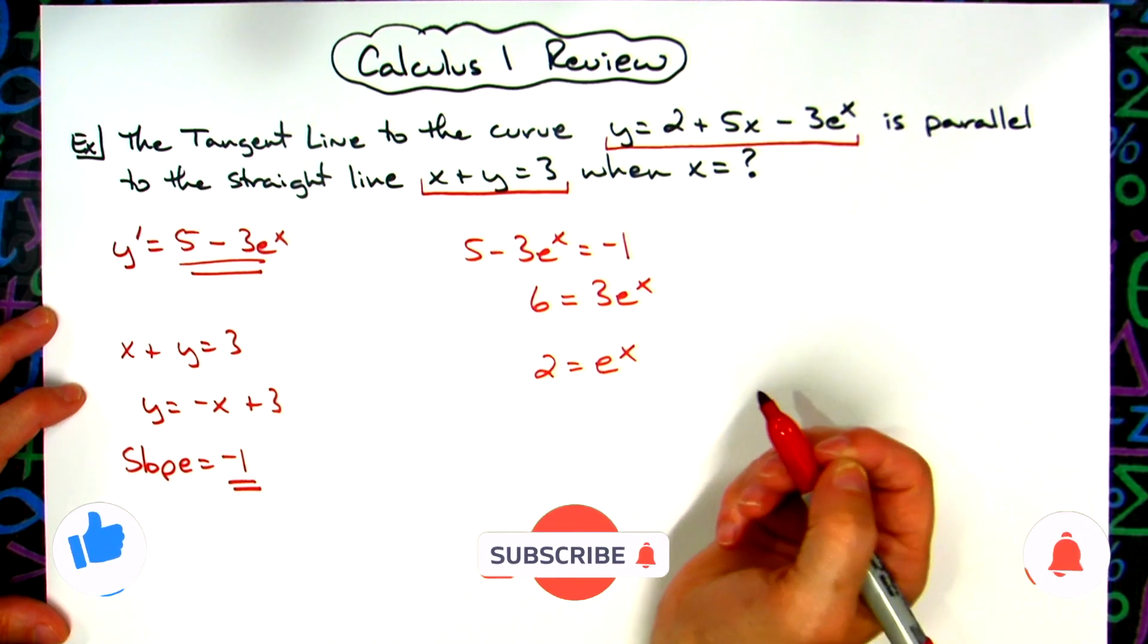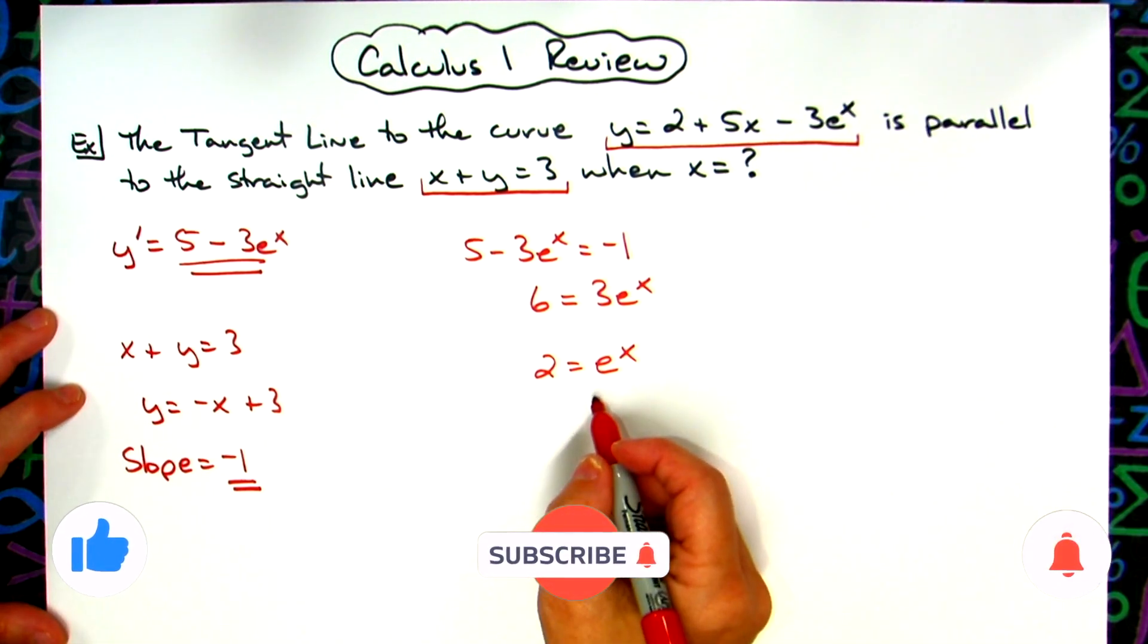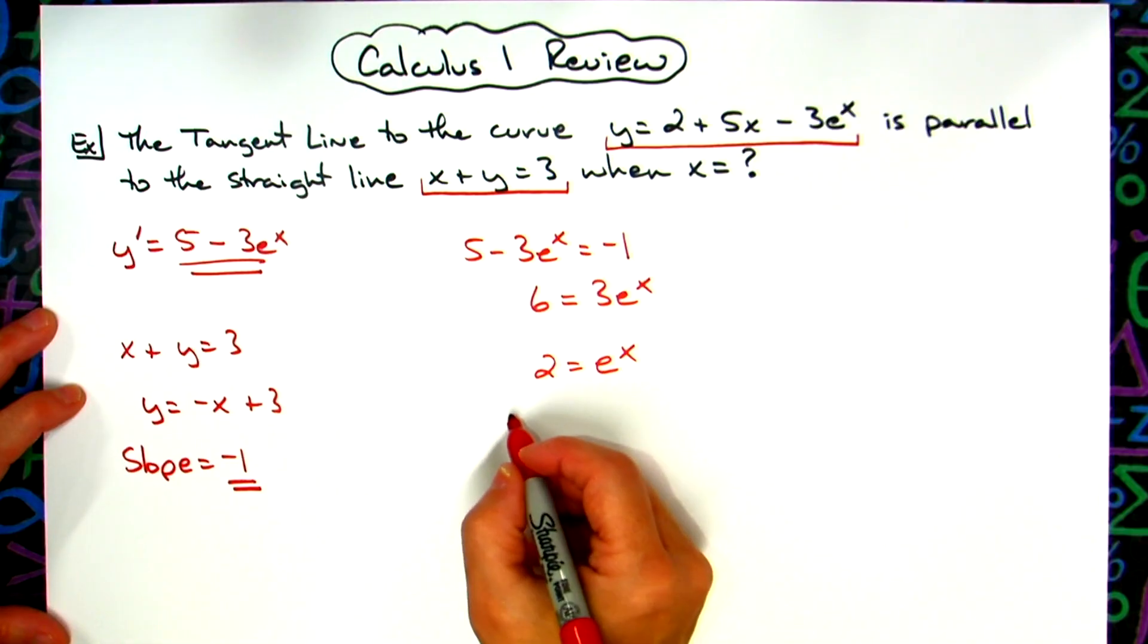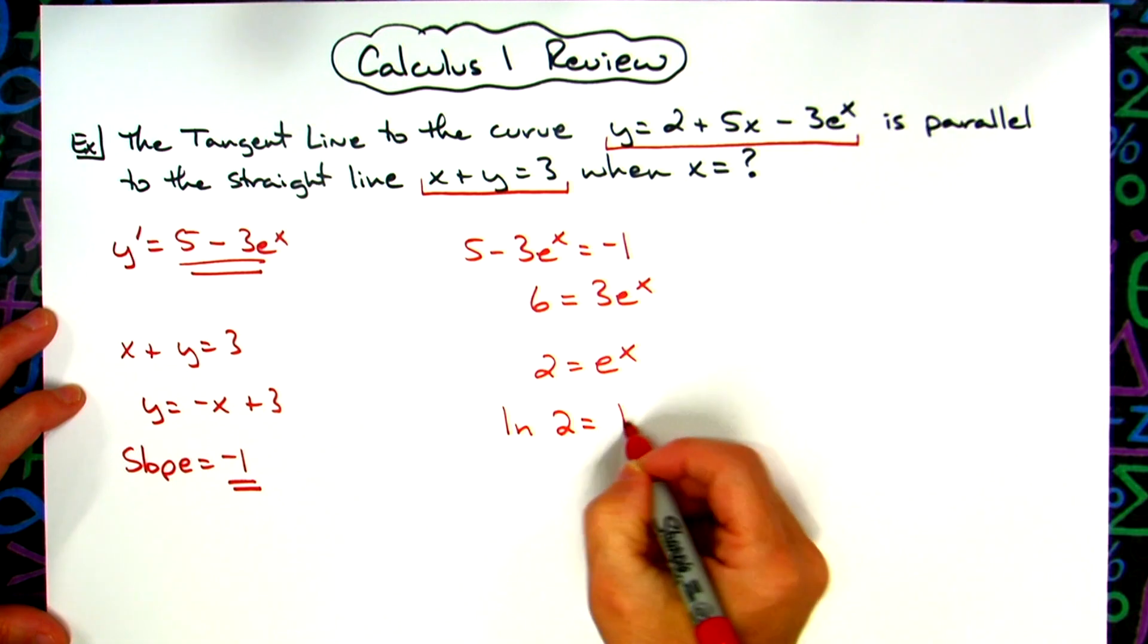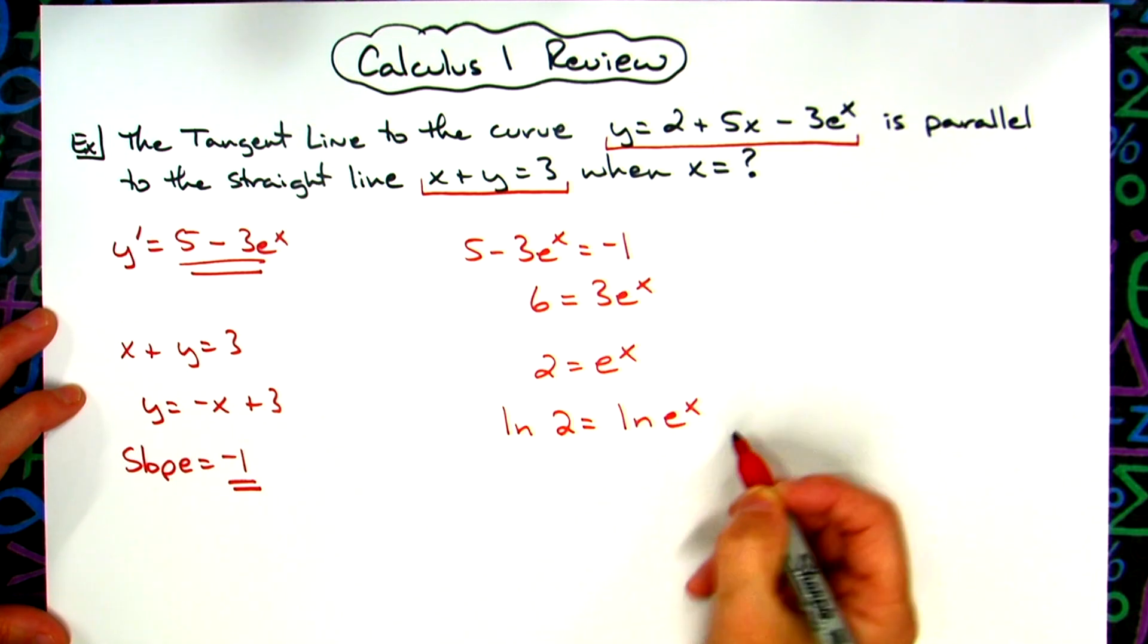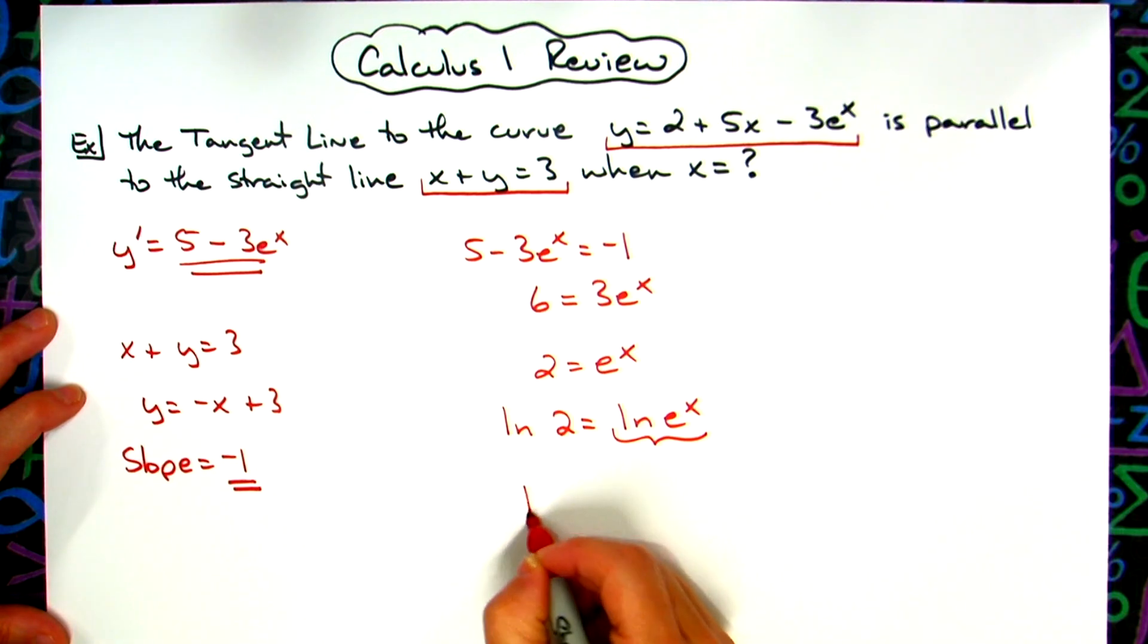All right, this is now an exponential function. I'm going to solve this by taking the natural log of both sides. So I have ln(2) = ln(e^x). Well, ln(e^x) is just x. So ln(2) = x.